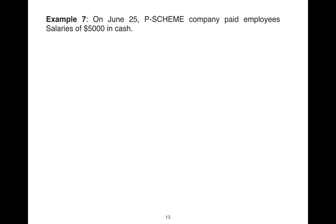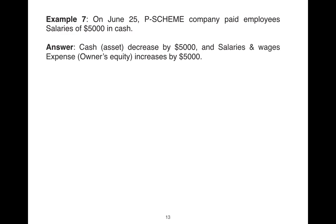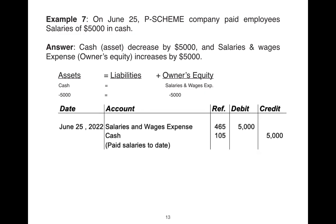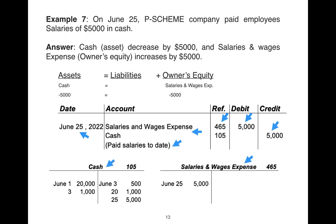In example seven, Peace Scheme Company paid salaries of $5,000 US dollar for June on the 25th of the same month. We have a decrease in cash by $5,000 and an increase in salaries and wages expenses by the same amount — minus $5,000 on both sides of the accounting equation. Our journal entry shows debit salaries and wages expenses and credit cash. The T-account posting shows the date and amount on the debit side for salaries and wages expenses and on the credit side for cash, in addition to amounts from examples 1, 3, 4, and 6.